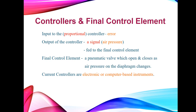The input to our controller — which in this case we will view as a proportional controller — is the error, which is the deviation of the sensed value of the controlled variable from the set point. The output of the controller is a signal; if we're talking about a pneumatic control valve, that signal is in the form of air pressure. This air pressure is fed to the diaphragm of the final control element so that the flow of fluid is being regulated. The final control element either opens or closes as air pressure in the diaphragm changes.